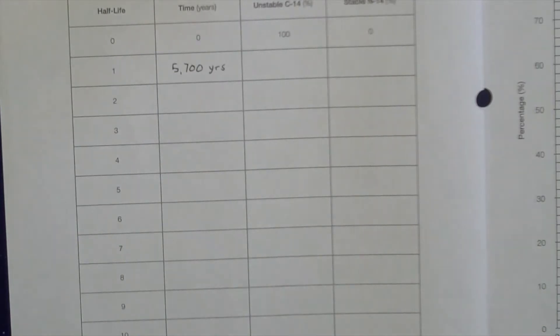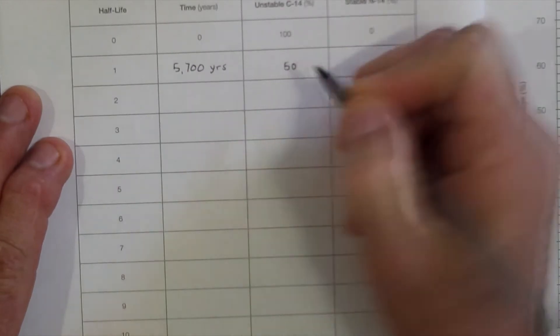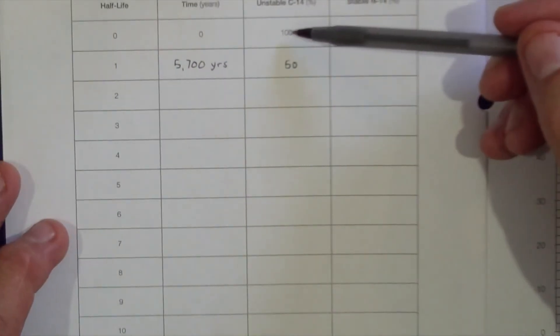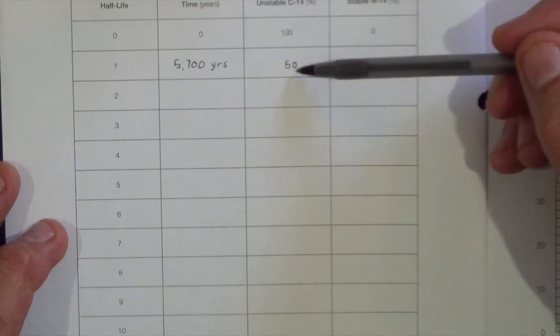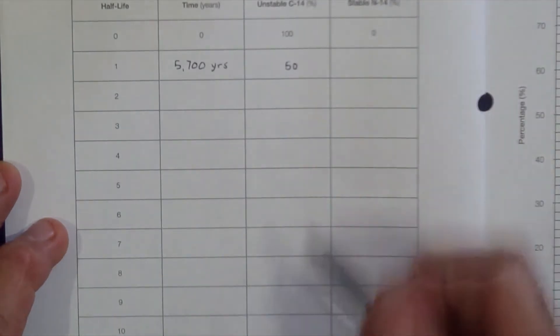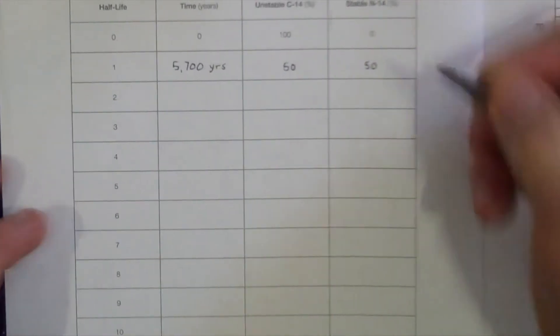Our original 100% Carbon-14 is now 50% Carbon-14. If we started off with 100% Carbon-14 atoms and now only have 50% Carbon-14 atoms, that means the remaining atoms have now been changed into Nitrogen-14, and we have 50% Nitrogen-14.